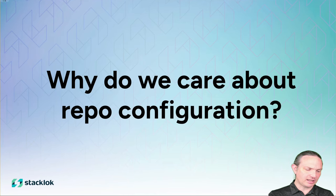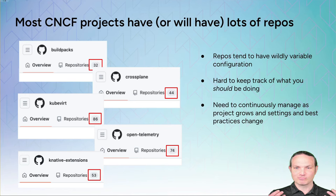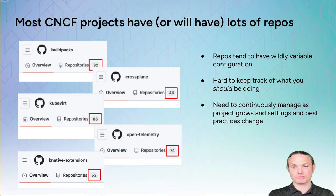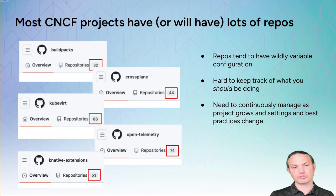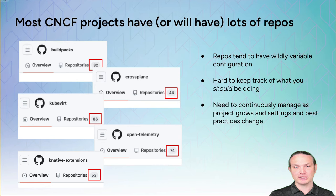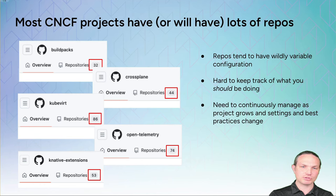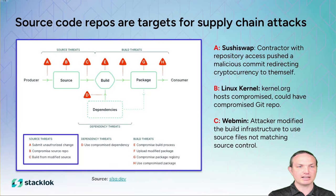So first of all, there's a lot of stuff you could worry about. Why are you worried about repo configuration? One reason is that we've got a lot of these things. The CNCF probably has 20,000 repos or more across the various projects. Individual projects sometimes have 50 to 100 — Knative extensions and the core Knative repos together are pushing close to 100 repos right now. And that's a lot to keep track of. If you screw up your repo configuration, there's a lot of bad stuff that can happen.